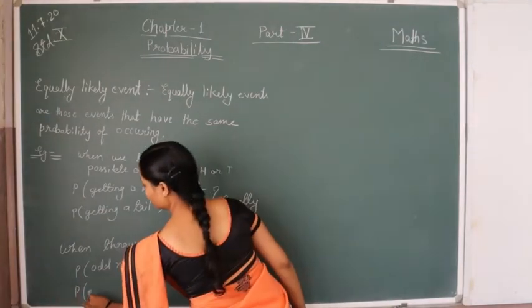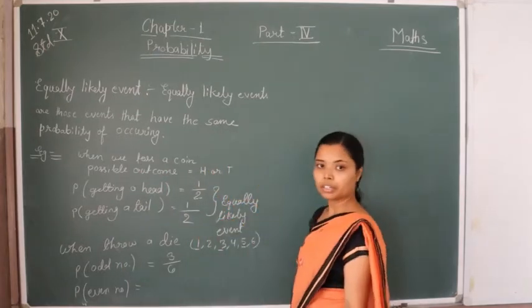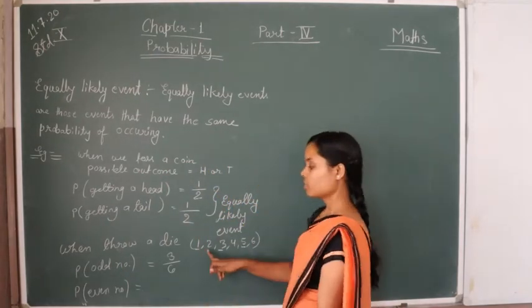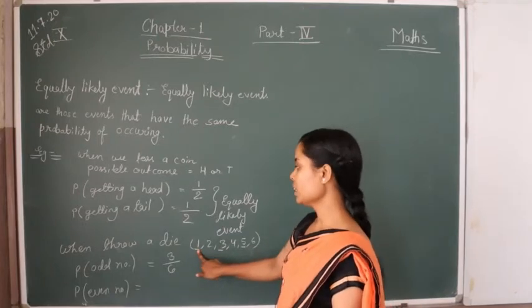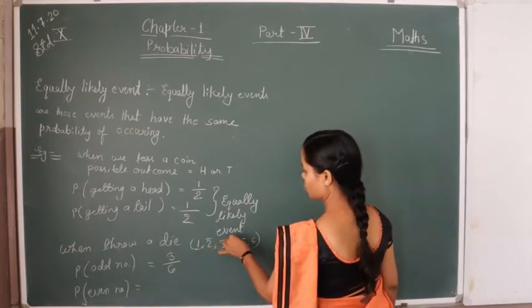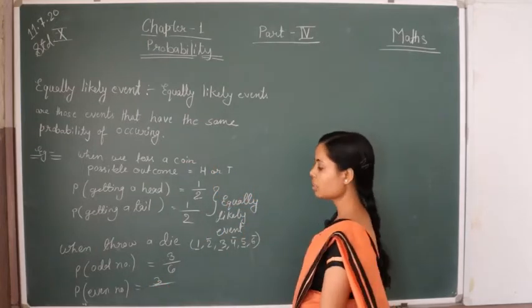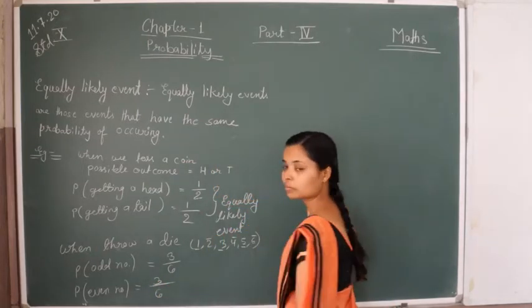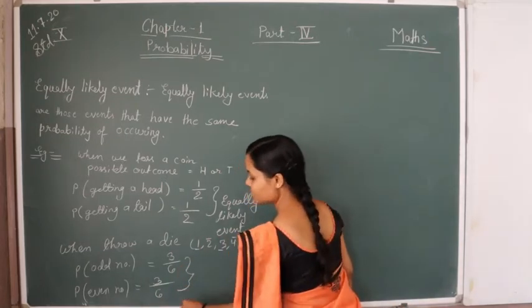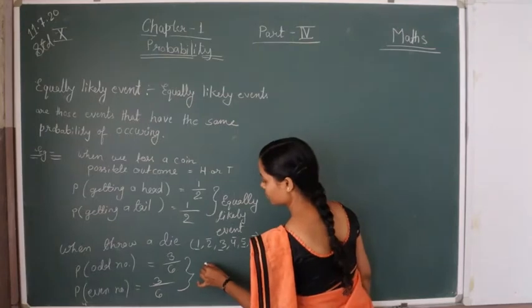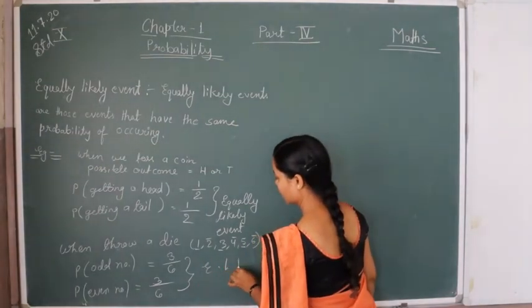Then if you find the probability of an even number — how many even numbers are there? 2, 4, and 6 — there are 3 even numbers. So the favorable outcomes are 3 and the possible outcomes are 6. Both are the same, so we can say that these are equally likely events.